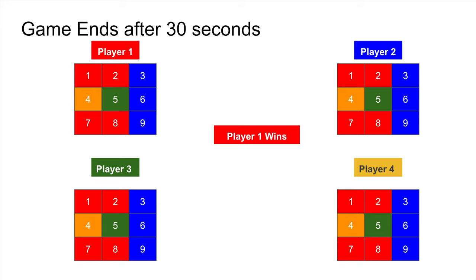The game ends after 30 seconds, at which point it can result in a draw or one player wins — for example player one wins with four cells.